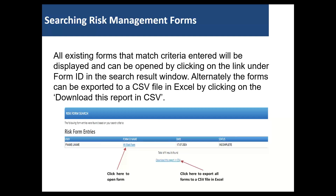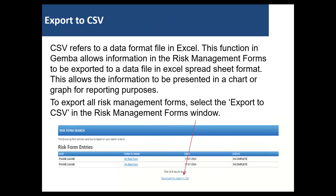Alternatively, the forms can be exported to a CSV file in Excel by clicking on download this report in CSV. CSV refers to a data format file in Excel. This function in GEMBA allows information in the risk management forms to be exported to a data file in Excel spreadsheet format.